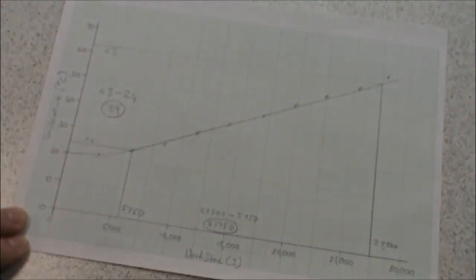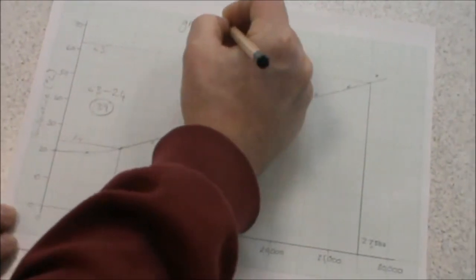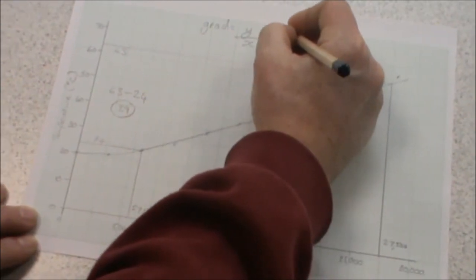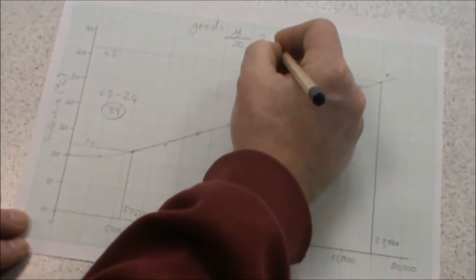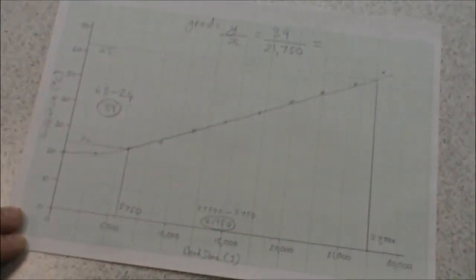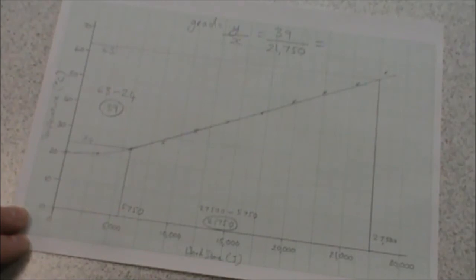To calculate the gradient, we do the y-value divided by the x-value, which in our case is 39 divided by 21,750, which gives us a value of 0.0018. That is the gradient of the graph.